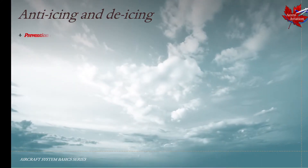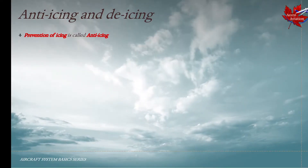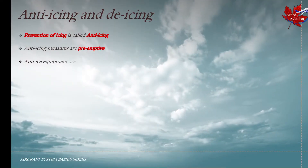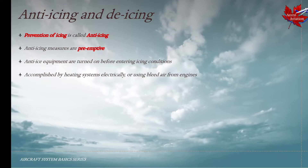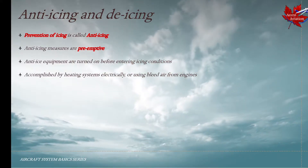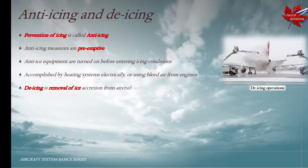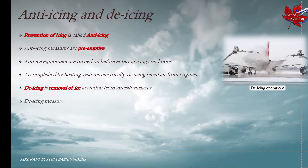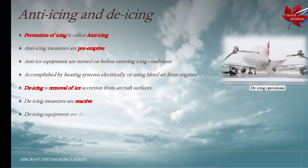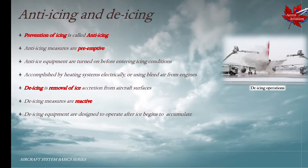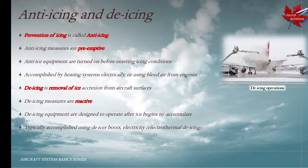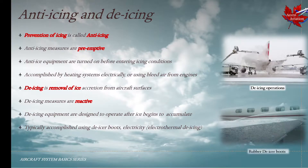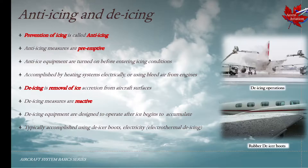Anti-icing and de-icing. The prevention of icing is called anti-icing, and these measures are pre-emptive. Anti-ice equipment is turned on before entering icing conditions, typically accomplished by heating the systems electrically or using bleed air from engines. De-icing is the removal of ice accretion from aircraft surfaces. De-icing measures are reactive in nature and these equipment are designed to operate after ice accumulates on the surfaces, typically accomplished using de-icing boots or electrothermal de-icing.